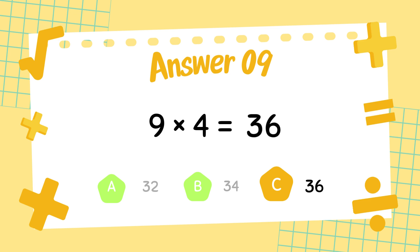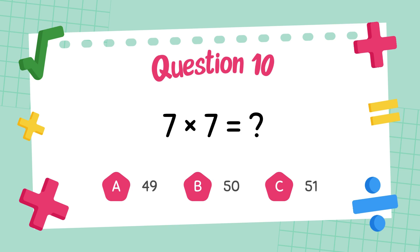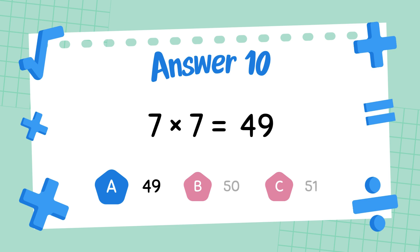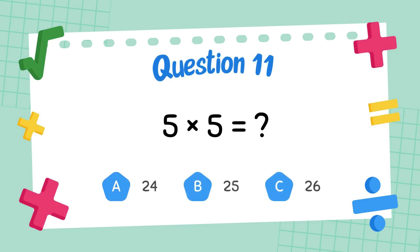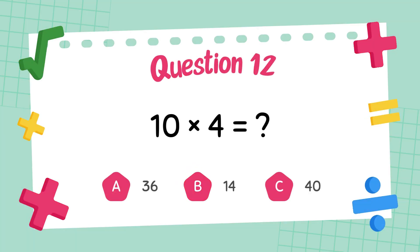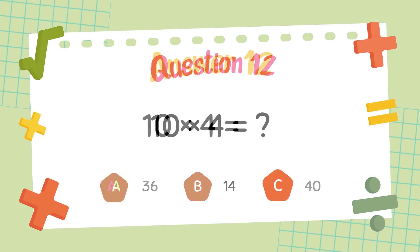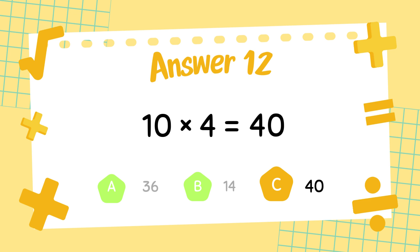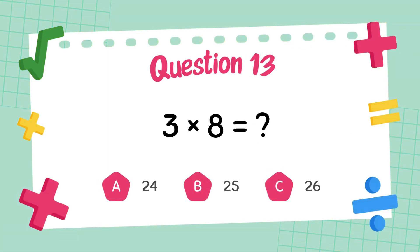What is 9 times 4? The answer is 36. What is 7 times 7? The answer is 49. What is 5 times 5? The answer is 25. What is 10 times 4? The answer is 40.